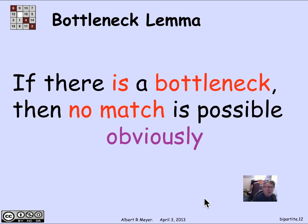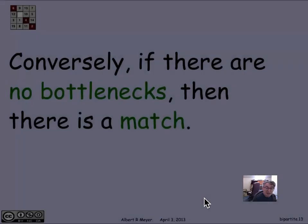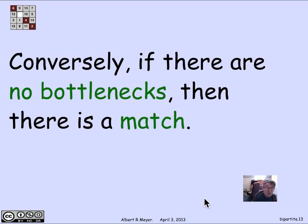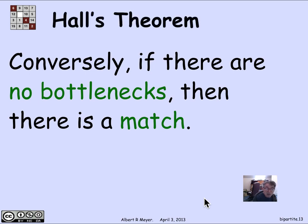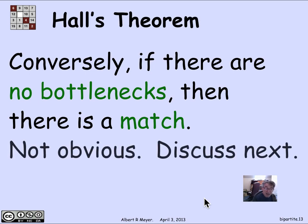So a bottleneck is a reason why there might not be a match. Now, a rather deep theorem states the converse: if there are no bottlenecks, then in fact there is a match. This is known as Hall's theorem. It's not obvious, although we'll find an understandable proof of it, and that's what we're going to do in the next segment.